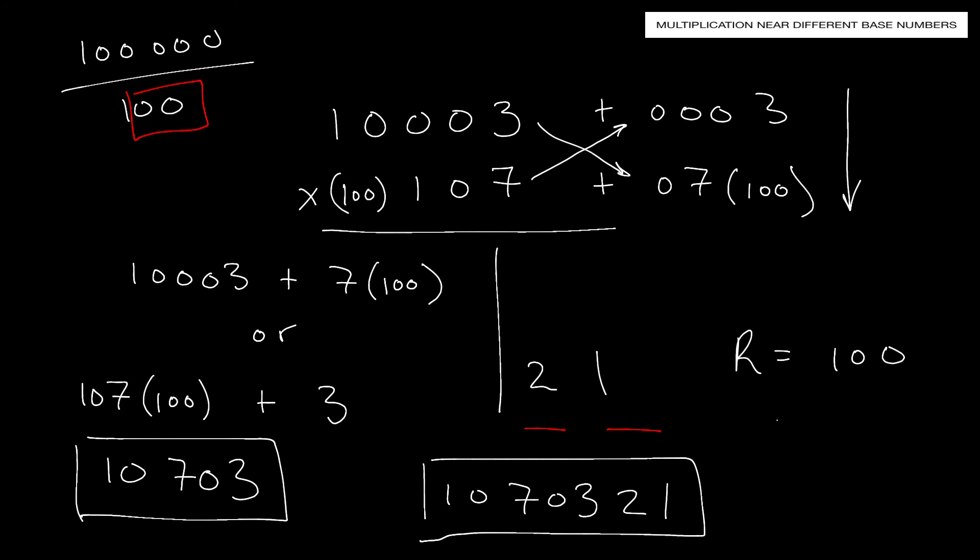This is multiplication near different base numbers. It's the same as multiplying near base numbers — the only differences are: increase the smaller number by the ratio before cross-addition or subtraction, and the number of zeros in the smaller base determines how many digits are allowed on the right-hand side. I hope you enjoyed this video. Using Vedic math, you can get big answers quickly — it's an extremely fast and convenient way to do arithmetic.